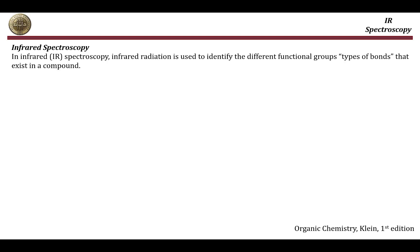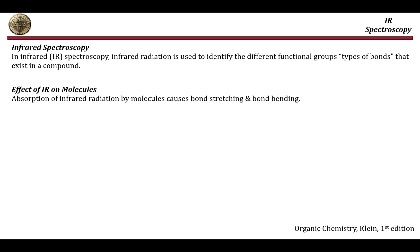In IR spectroscopy, IR radiation is used to identify the different types of functional groups or the different types of bonds that exist in a compound. When a molecule absorbs IR radiation, there are two types of vibrations which may occur. The first one is called the bond stretching vibration and the second one is called bond bending vibration.